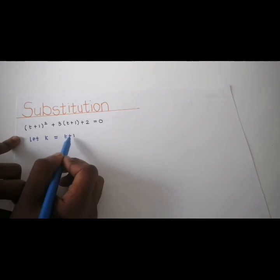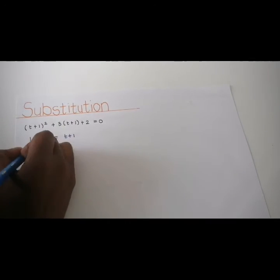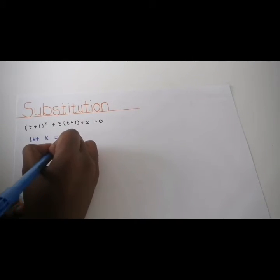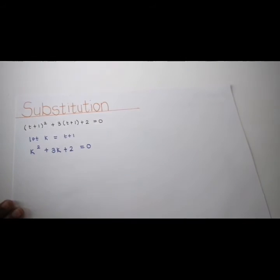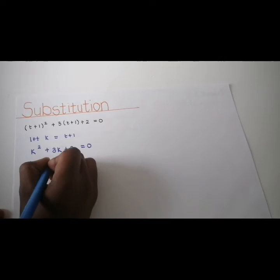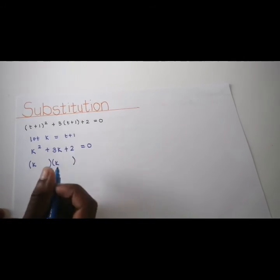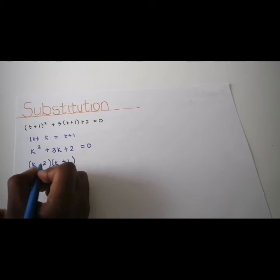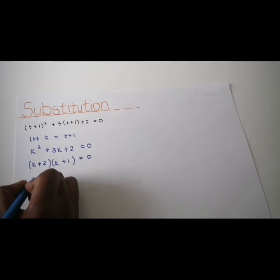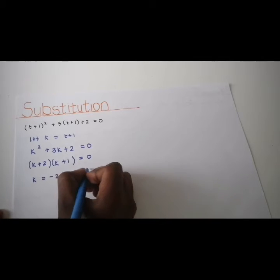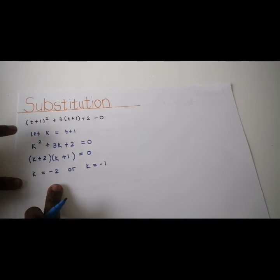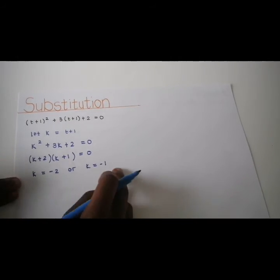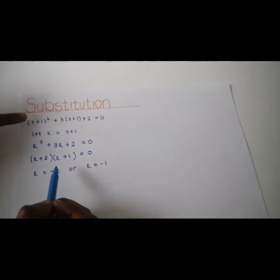We substitute k every time we see t plus 1. So we have k squared plus 3k plus 2 equals 0. Now it looks like a normal equation. We get k plus 2 times k plus 1 equals 0, so k equals negative 2 or k equals negative 1. But we're not done — remember we substituted, so we have to calculate the true value of t.